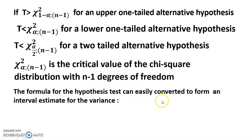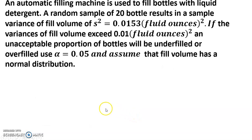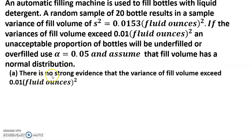The formula for the hypothesis test can easily be converted to form an interval estimate for the variance. Now, an automatic high filling machine is used to fill bottles with liquid detergent. A random sample of 20 bottles results in a variance of fill volume of s square equal to 0.0153 fluid ounce squared. If the variance of fill volume exceeds 0.01 fluid ounces squared, an unacceptable proportion of bottles will be underfilled or overfilled. Use alpha equals 0.05, and assume that the fill volume has a normal distribution.